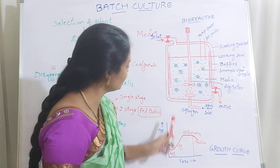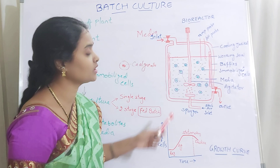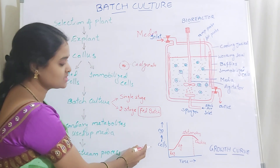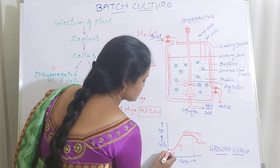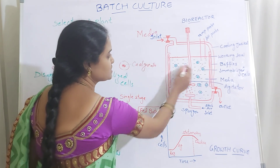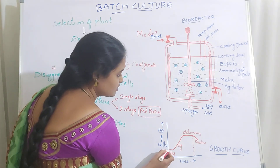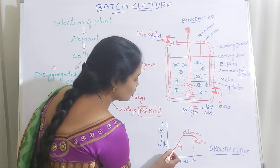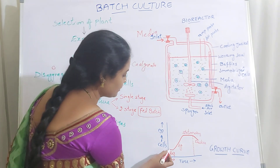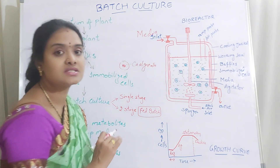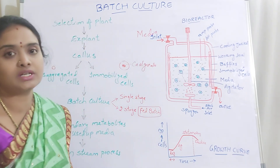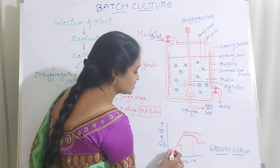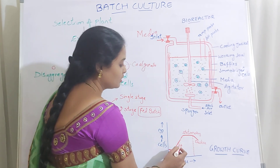You can see the growth curve showing how cells are growing and how they are producing secondary metabolites. On the y-axis is the number of cells and on the x-axis is time. After adding the cells, for a certain period of time there is no growth or increase in number of cells — the number of cells remains stagnant. This means the cells are getting adjusted to the new environment or new cultural conditions. Once they get adjusted, they start dividing — this is the exponential or log phase.